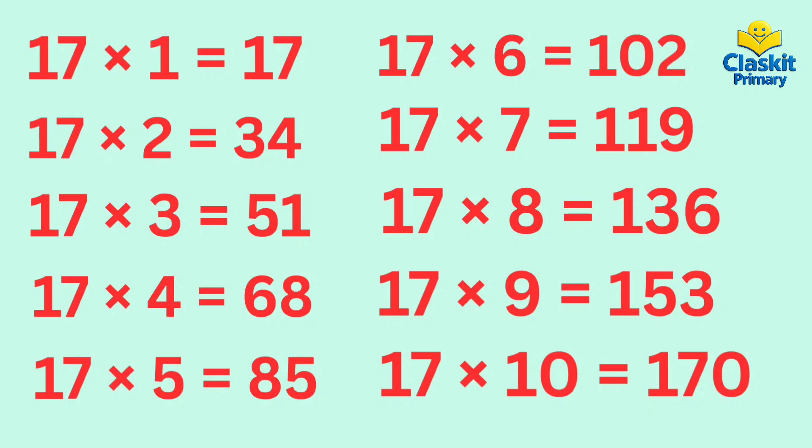17 fives are 85. 17 sixes are 102. 17 sevens are 119. 17 eights are 136.